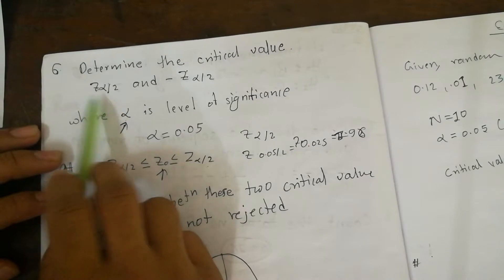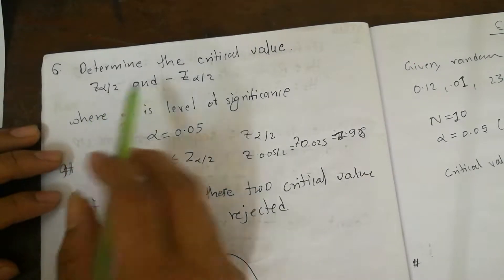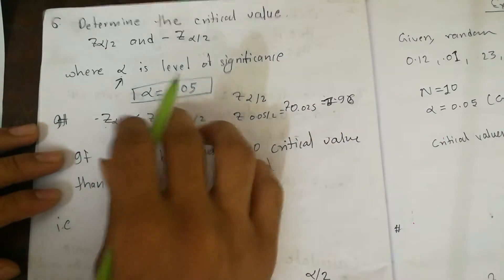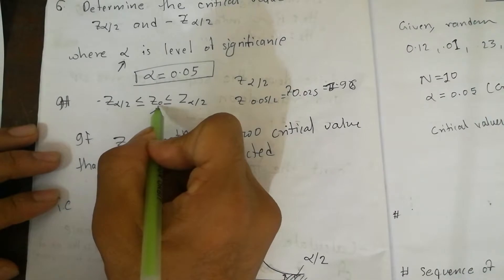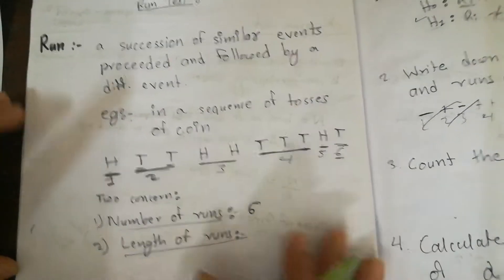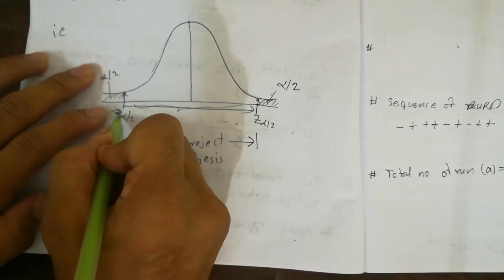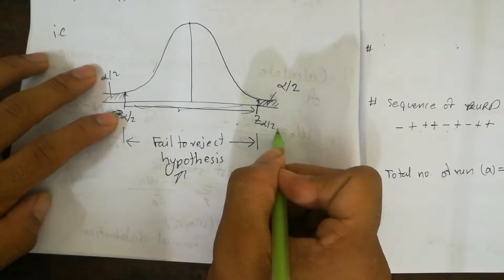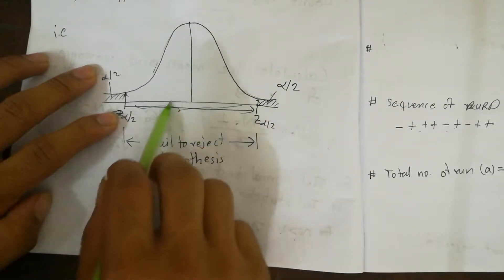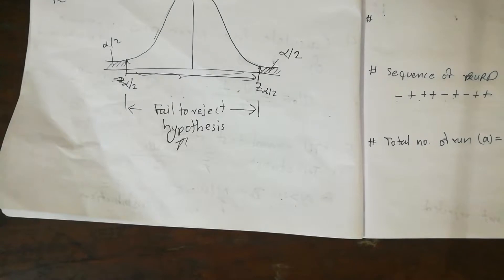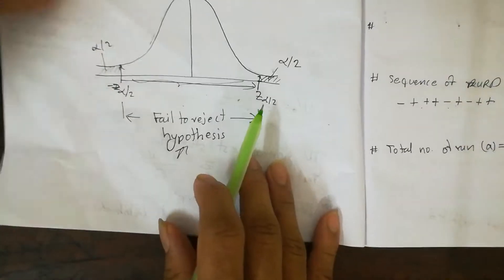Step 6 is to determine the critical values: z_{α/2} and −z_{α/2}, where α is the level of significance. Suppose α = 0.05. If the calculated value of z₀ lies between −z_{α/2} and +z_{α/2}, then H₀ is not rejected — meaning we fail to reject the null hypothesis. If the value lies outside these bounds, we reject H₀.